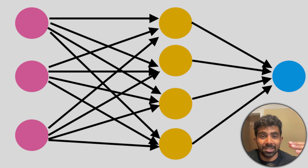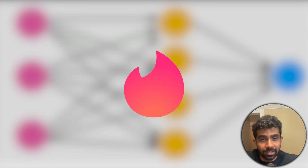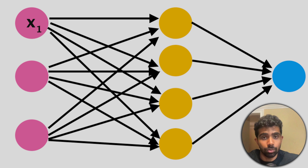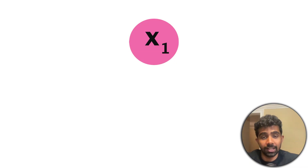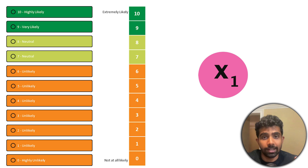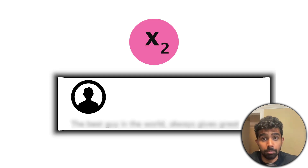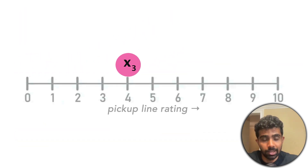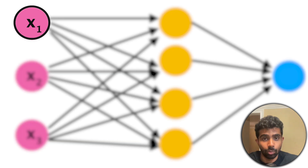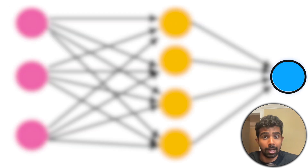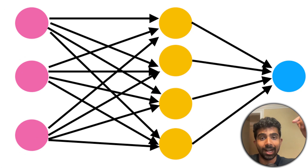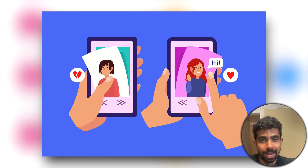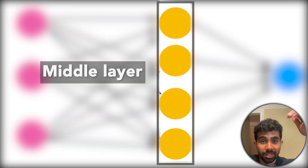Fundamentally, a neural network is just something we use to make predictions. Let's say we want to predict your success on dating apps like Tinder or Hinge. We have three input attributes: x1 is attractiveness of your profile photo on a scale of one to ten, x2 is how clever your bio is, and x3 is how clever your pickup lines are. Our ultimate goal is to predict one output — say, the number of matches you'll get.